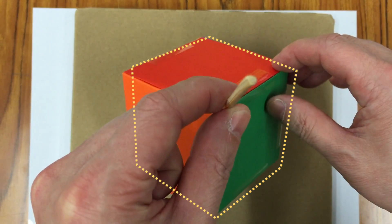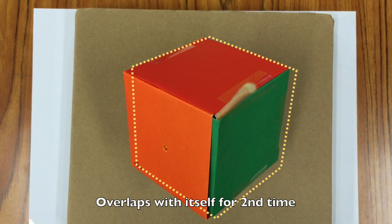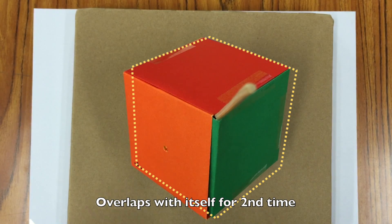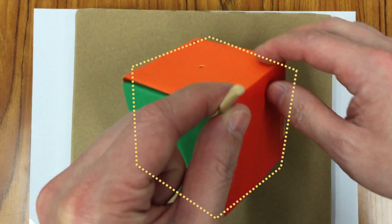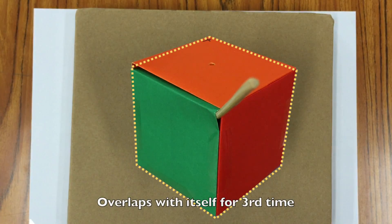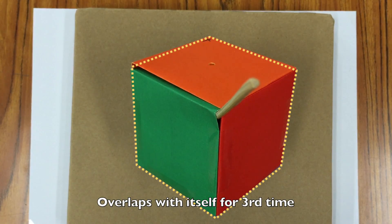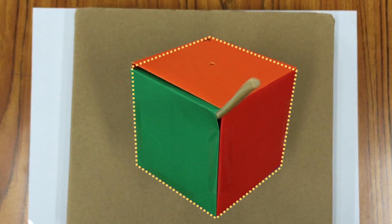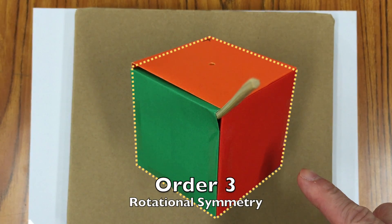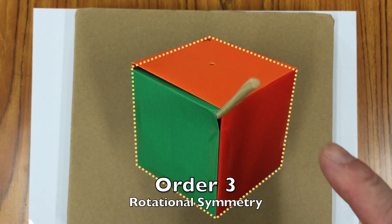What about 240 degrees? Again it will overlap with itself. Finally, if I rotate it by 360 degrees, and again it will overlap with itself. So this is an order-three rotational symmetry of the cube.